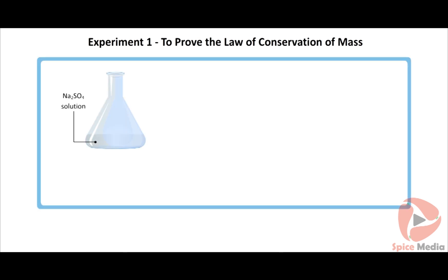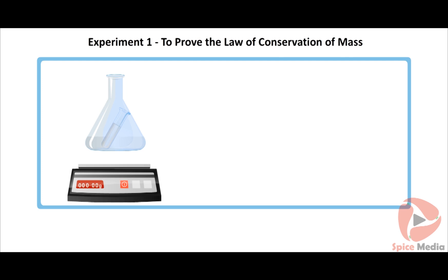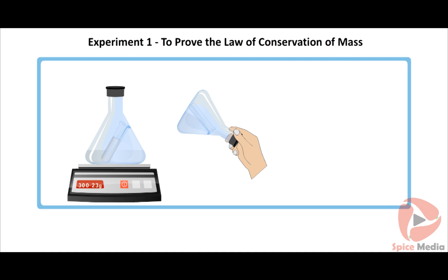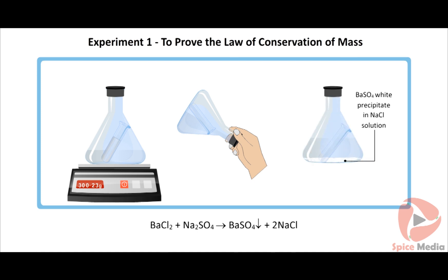Take some sodium sulfate solution in a conical flask and introduce a test tube containing some barium chloride solution, as shown in the figure. Weigh the whole apparatus on a balance and note down the initial reading. Tilt the conical flask so that the two solutions are mixed.